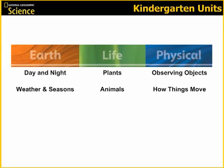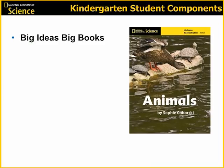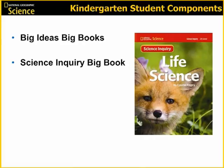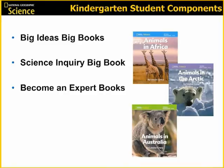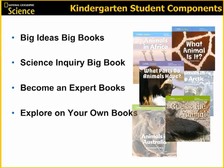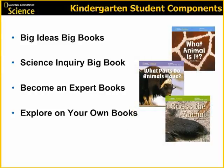Each of those units has two parts. For each unit, students will be working with big ideas, big books — one per part — a science inquiry write-on wipe-off big book. They will also have access to six Become an Expert books per unit, or three for each part. These books tie directly to the big ideas and are presented at three reading levels, allowing differentiation for students at all levels. And then six Explore on Your Own books, three per part, for each unit, which are also leveled.